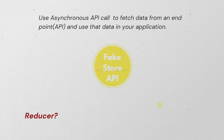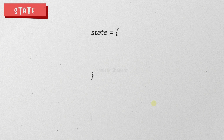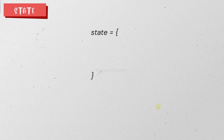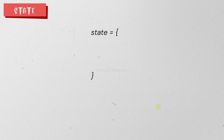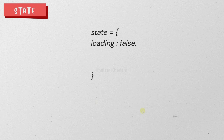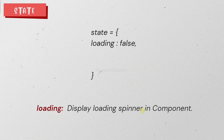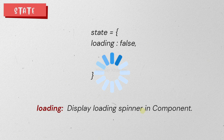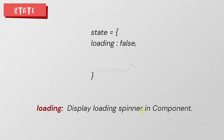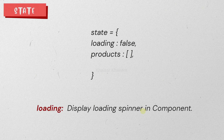We should understand what is the structure of the reducer, the state, and the action. Starting with state — state is an object inside which we pass properties and values. Whenever we are fetching data from an API, the state usually has three properties. The first is a loading flag. Initially in the initial state, we are going to set this value as false, and once we start fetching the data, we change it to true — allowing us to display a loading spinner to the user.